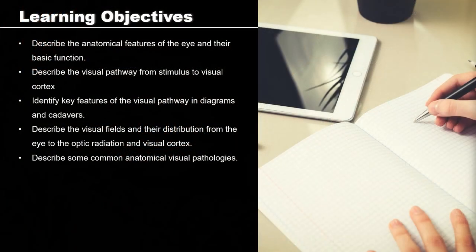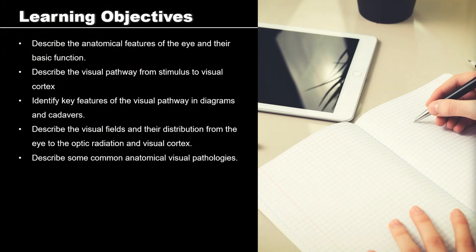After this lecture and any further necessary study, you should be able to describe the anatomical features of the eye and their basic function, describe the visual pathway from stimulus to the visual cortex, identify key features of the visual pathway in diagrams and in cadavers, describe the visual fields and their distribution from the eye to the optic radiation and visual cortex, and describe some of the common anatomical visual pathologies.